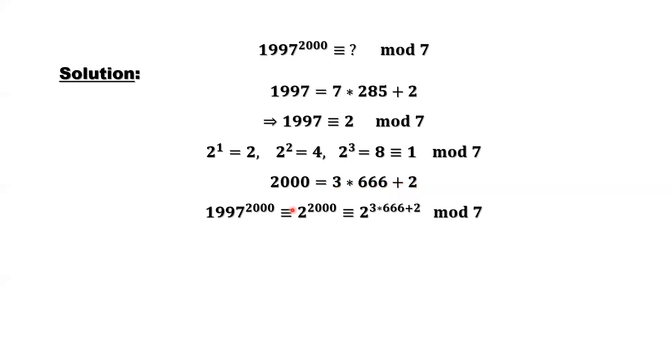1997 to the power 2000, we want to find the remainder if divided by 7. It's equivalent to find the remainder of 2 to the power 2000 divided by 7. Both are equivalent. This notation means congruent, if divided by 7, modulo 7. This is an important result.